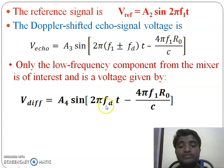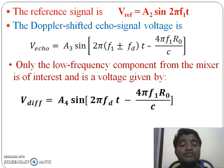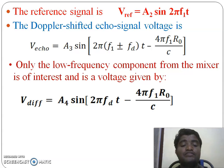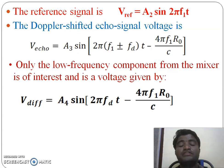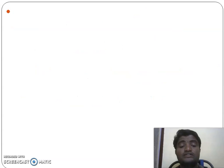For moving targets, FD is a non-zero value and it also varies from location to location, so you get variable voltages. For stationary targets you get a constant amplitude, and for moving targets you get variable voltages. This is the basic concept for separating moving targets from stationary targets.